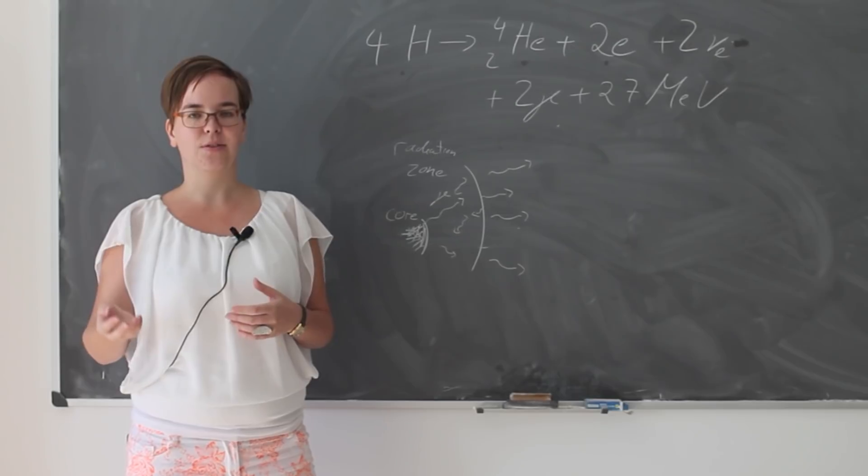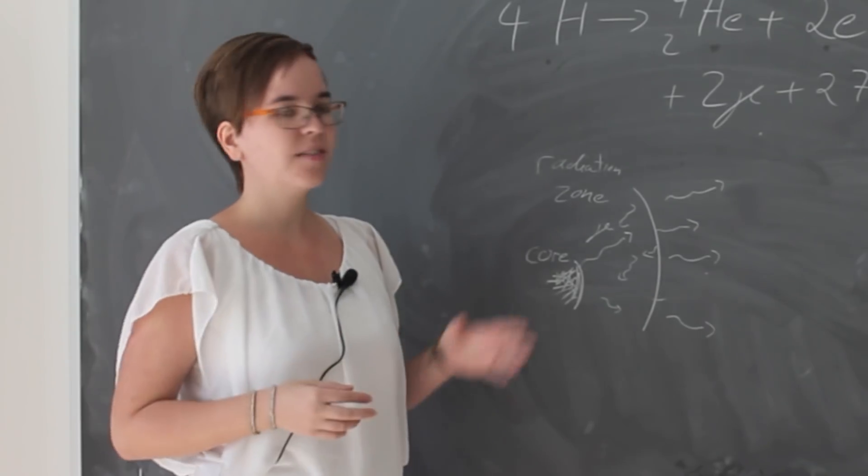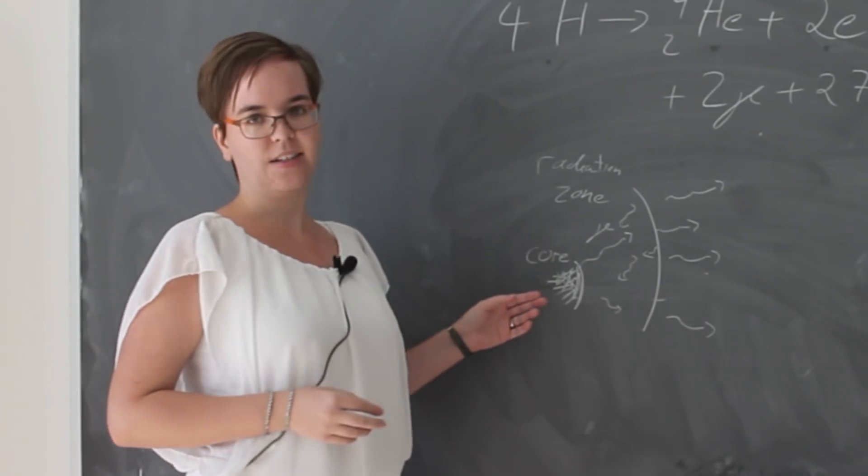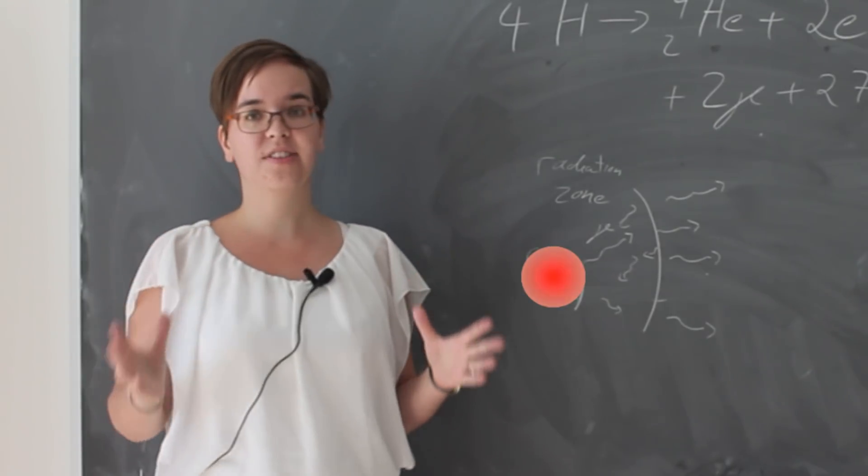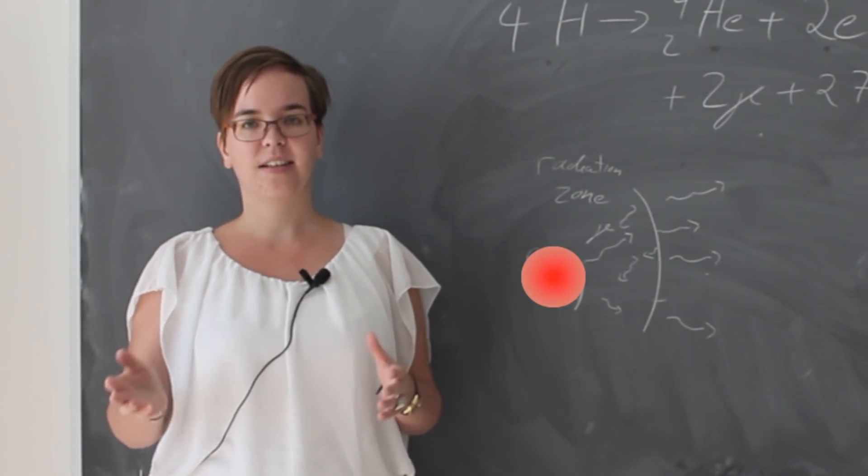This energy gets carried away by the photons and the neutrinos. This fusion process happens in the center of the Sun, which has a huge central density, 10 times the density of gold or lead.